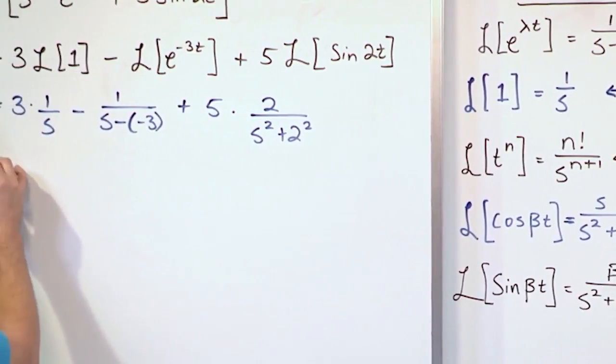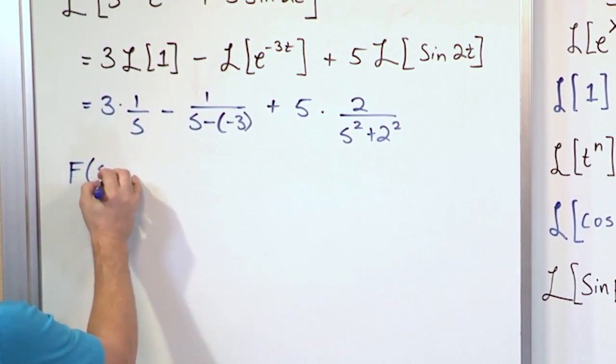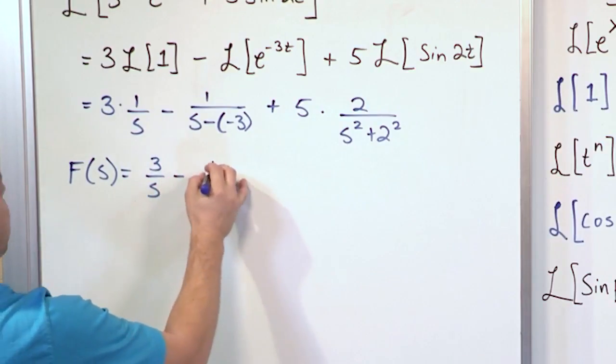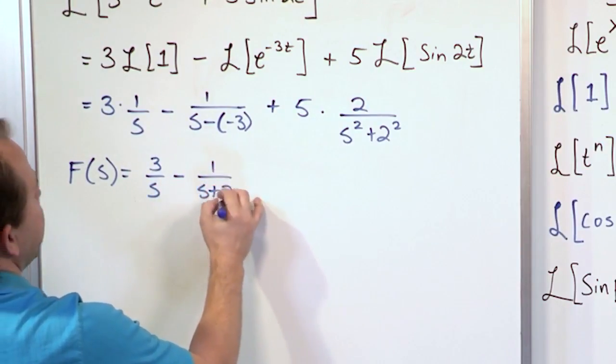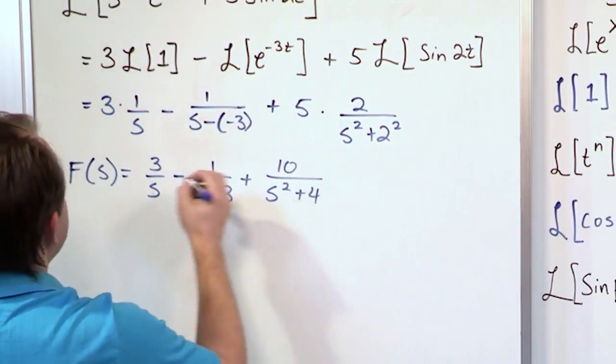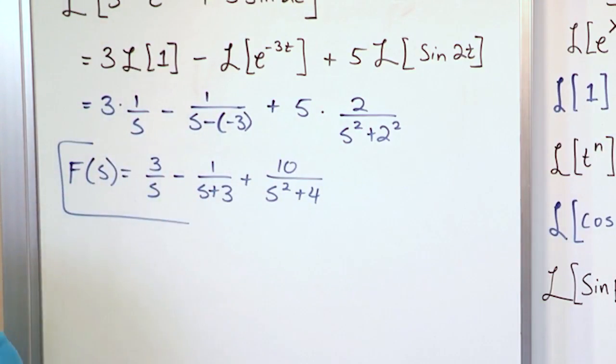So the answer is going to be f of s here will be 3 over s minus 1 over s plus 3 plus 10 over s squared plus 4. 5 times 2 is 10. This is the answer: 3 over s minus 1 over s plus 3 plus 10 over s squared plus 4. So that's the Laplace transform, again just working on each thing in sequence.